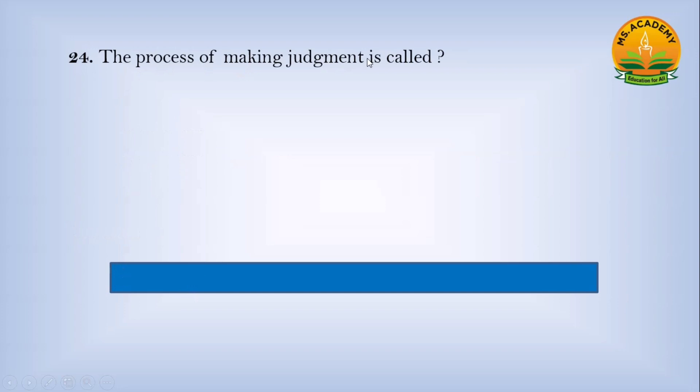The process of making judgment is called: Option a) Budgeting, Option b) Documentation, Option c) Evaluation. Answer: c - Evaluation.